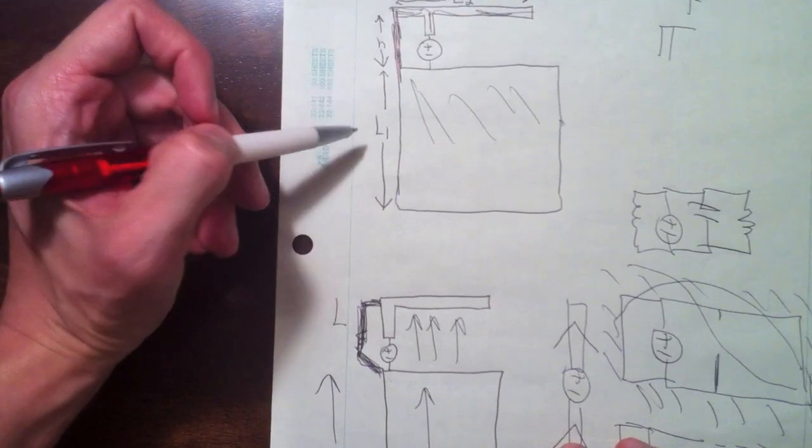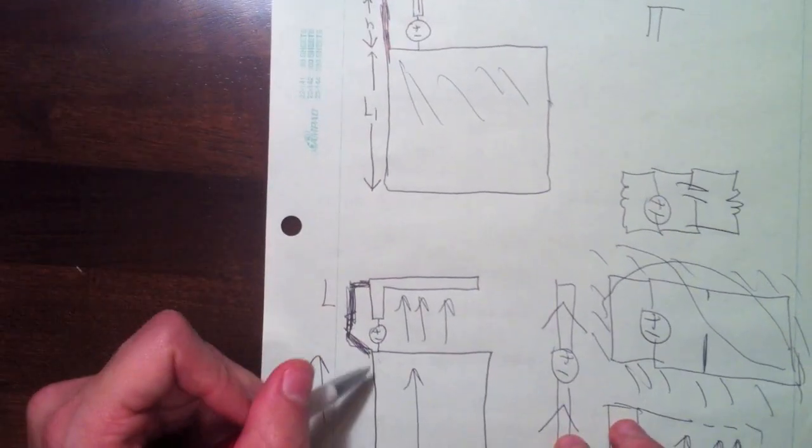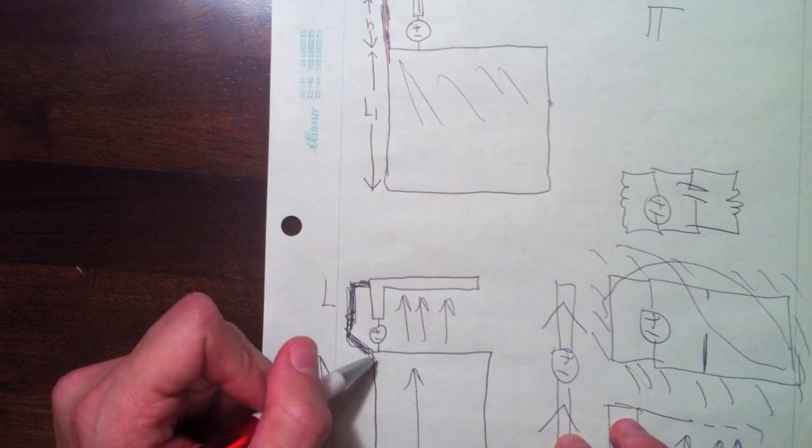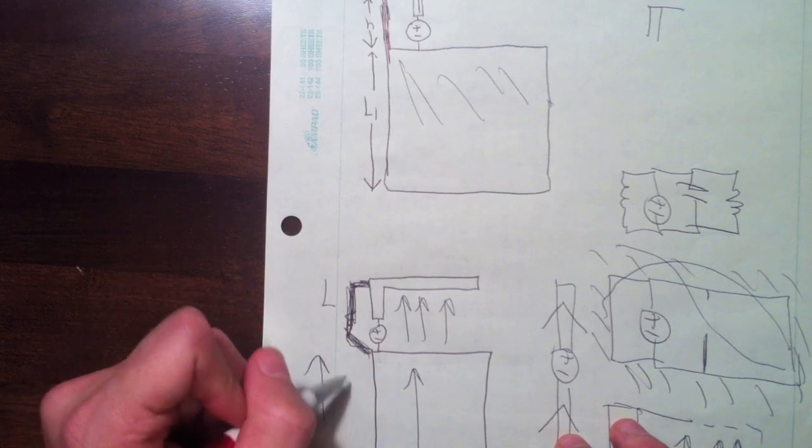You can start to see where these lengths come from. For a dipole arm, you need this to be lambda over 4.